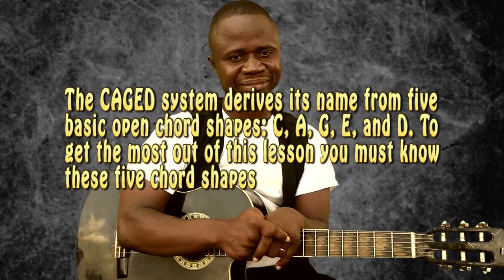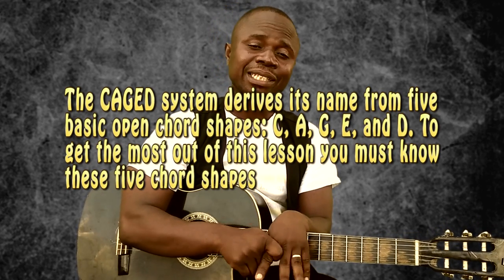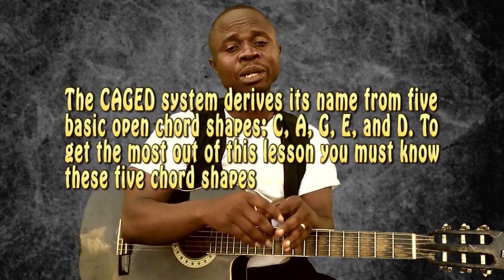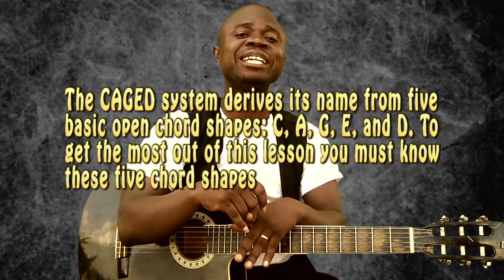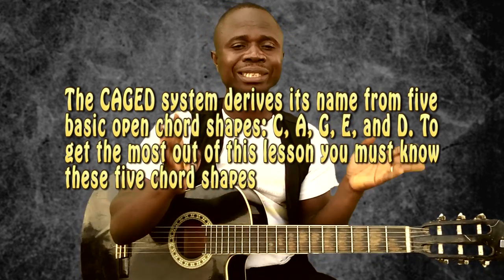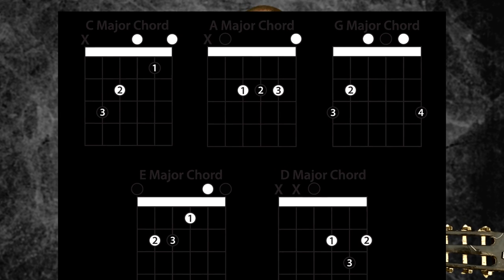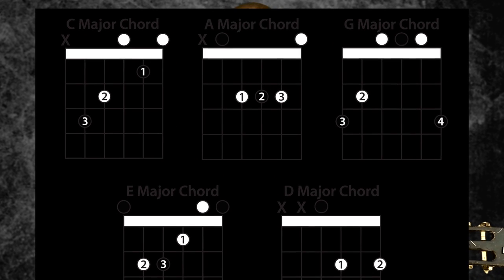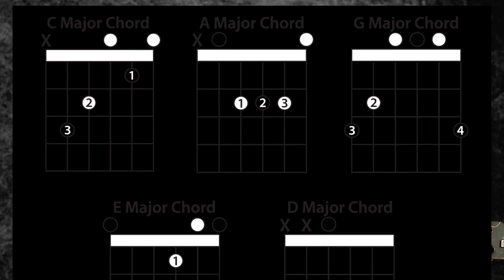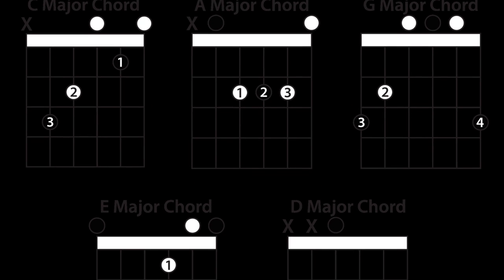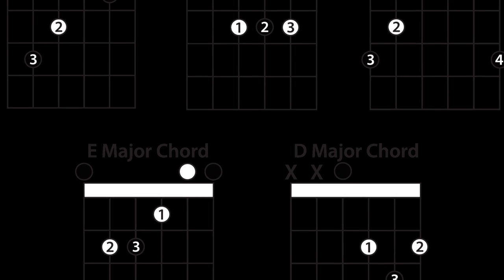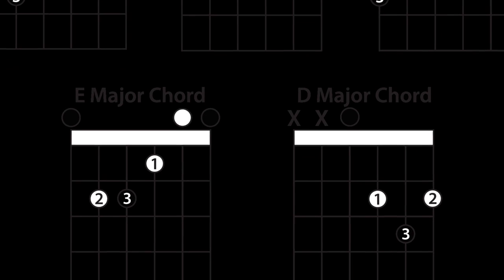I'm going to draw your attention to an important system we call the CAGE system. That is one important tool, one important system for finding keys. What is the CAGE system? CAGED: C, A, G, E, D. Each one stands for a chord — C for chord C, A for chord A, G for chord G, E for chord E, and D for chord D. The CAGE system.